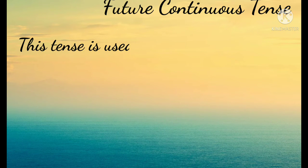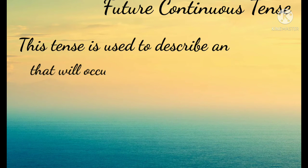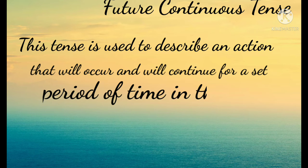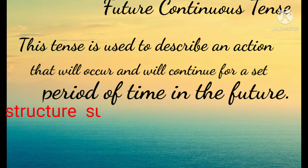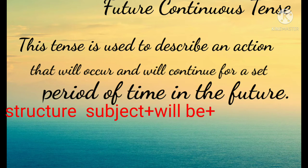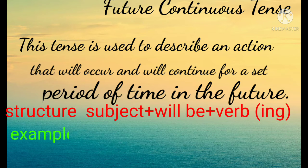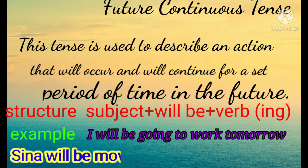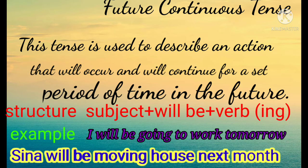Next is future continuous tense. This tense is used to describe an action that will occur and will continue for a set period of time in the future. Structure: Subject plus will be plus verb+ing. Example: I will be going to work tomorrow. She will be moving house next month.